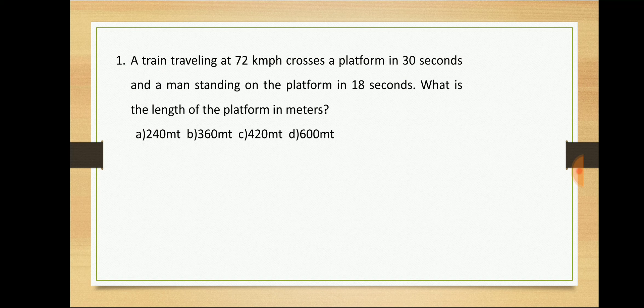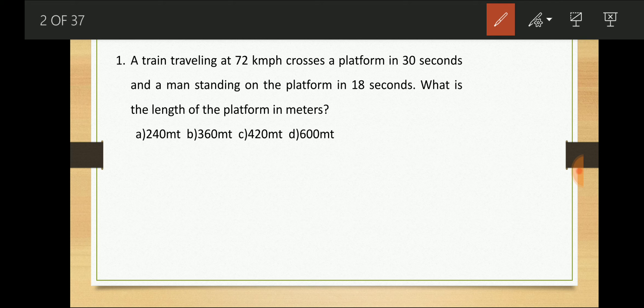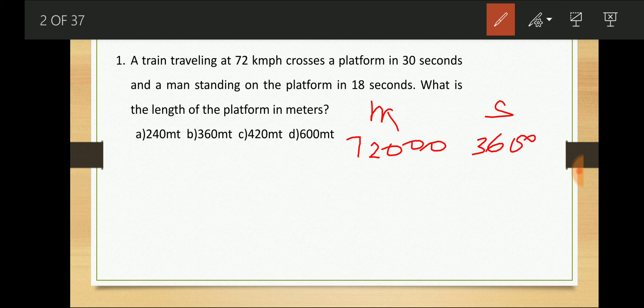First question: a train travelling at 72 km per hour crosses a platform in 30 seconds and a man standing on the platform in 18 seconds. What is the length of the platform in meters? The train travels at 72 km per hour, meaning it covers 72,000 meters in 3600 seconds, so it goes 20 meters per second.